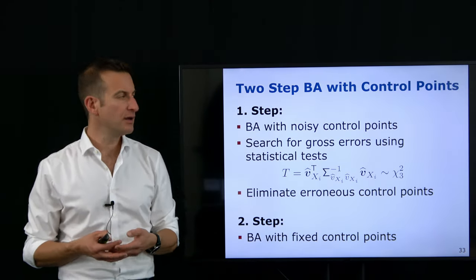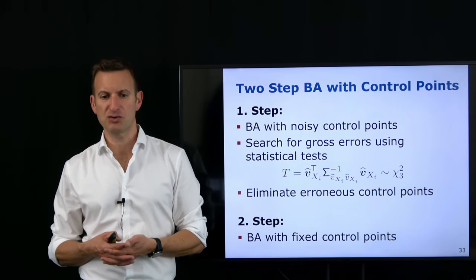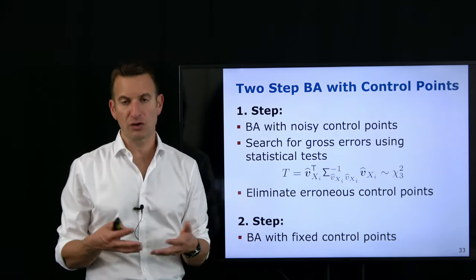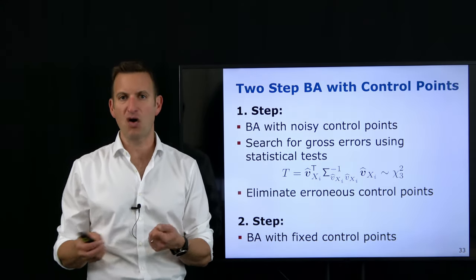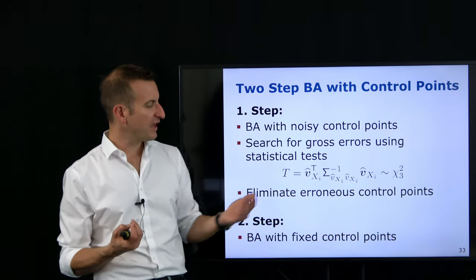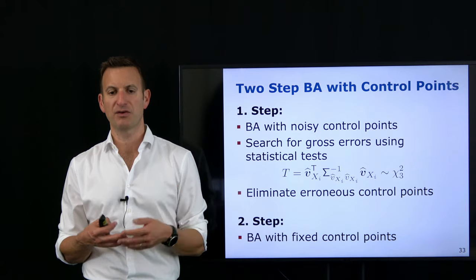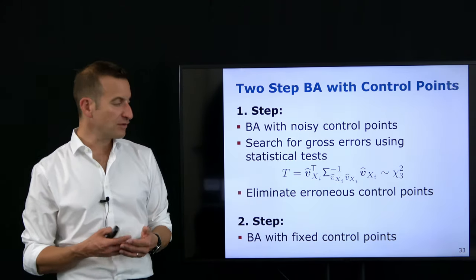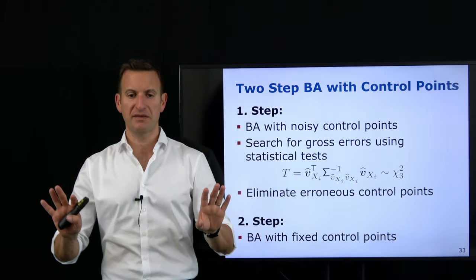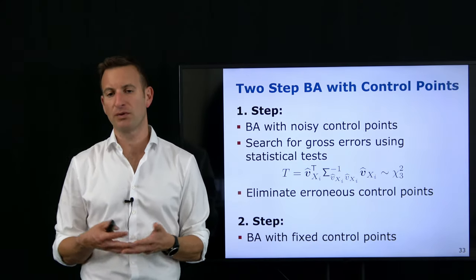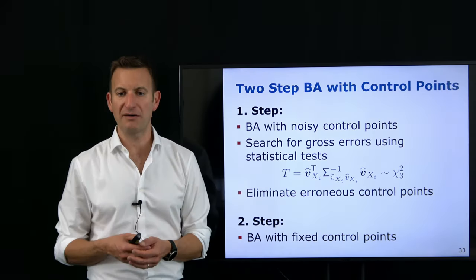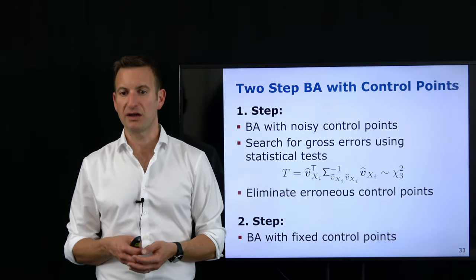You can also do both together: start with noisy control points, perform the statistically optimal solution, then perform a statistical test to search for gross errors or outliers in your control points — because someone may have noted a wrong ID and mixed up coordinates. If through a statistical test you find that the assumed uncertainties for certain control points are inconsistent with the result, you eliminate those outlier control points, don't consider them, and then run your bundle adjustment with fixed control points if needed. Otherwise, after step one you're done with your statistically optimal solution.